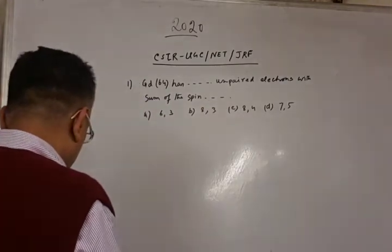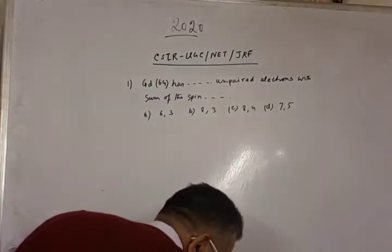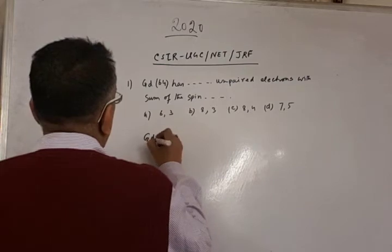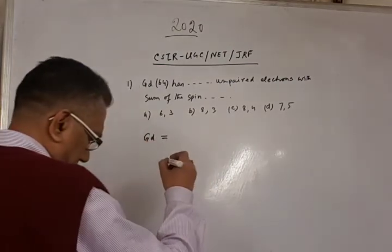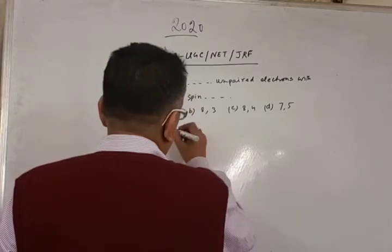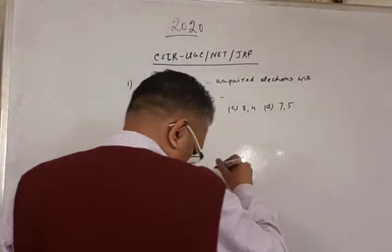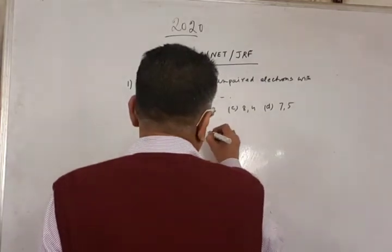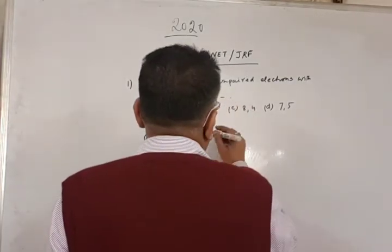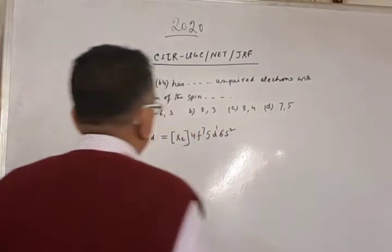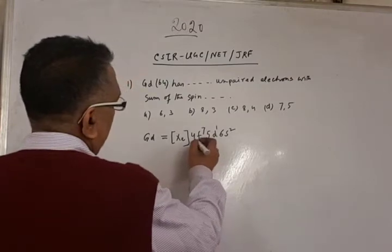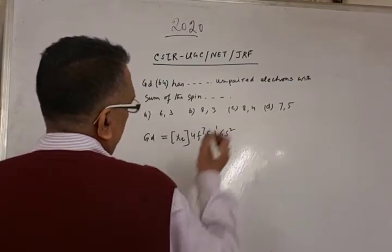So we can see that in case of gadolinium, the electronic configuration Gd having electronic configuration of xenon core Xe 4f7, 5d1, 6s2. So this is the electron configuration of the Gd, xenon core 4f7, 5d1, 6s2.